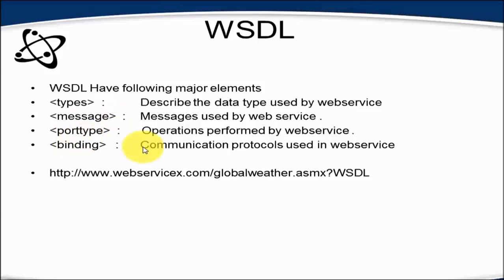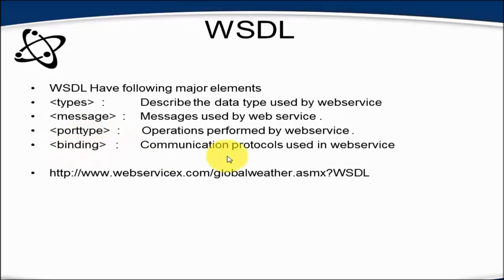The second element is Messages. For example, if I am going to receive a zip code, that zip code is a message. If I am going to return address line 1, address line 2, and address line 3, those are the messages — similar to variable names in a programming language. Port Type describes the different operations supported by the web service, such as validate address, clean address, or for a weather service: get today's weather or forecast tomorrow's weather. Binding describes the communication protocol used in the web service.